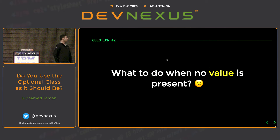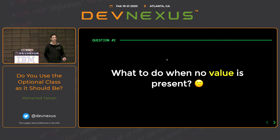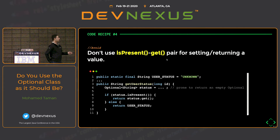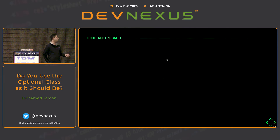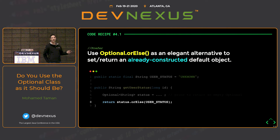What do we do when no value is present? Sometimes we want to return a default value. A common pattern is checking isPresent() manually, which is correct but not elegant. There is a better method: orElse(). You don't have to do all those checks — if the value is present it returns it, if not it returns the default one.